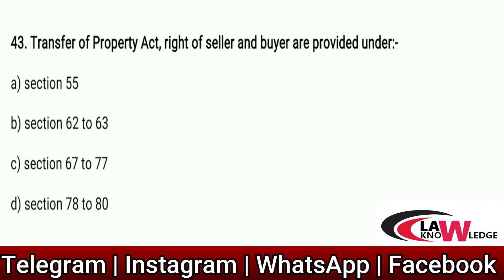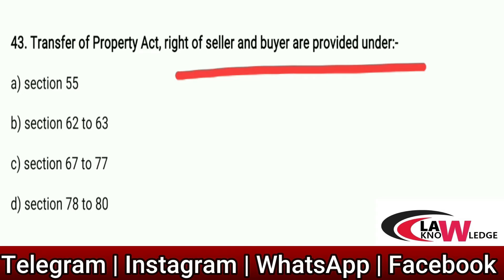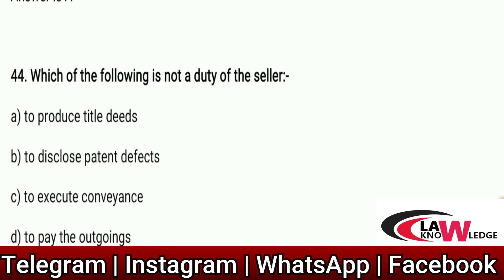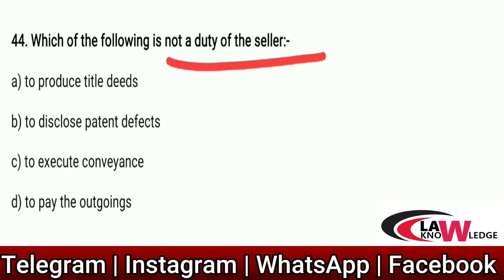Q43: Under the Transfer of Property Act, rights of seller and buyer are provided under — Option A: Section 55. Option B: Section 62–63. Option C: Section 67–77. Option D: Section 78–80. Correct answer is A, Section 55, which deals with rights of seller and buyer. Q44: Which of the following is not a duty of the seller? Option A: To produce the title deeds. Option B: To disclose patent defects. Option C: To execute conveyance. Option D: To pay the outgoings. Correct answer is B — to disclose patent defects is not a duty of the seller.